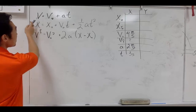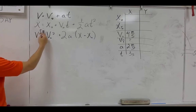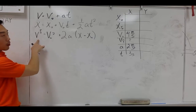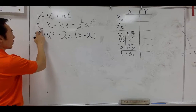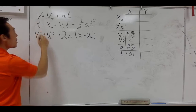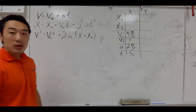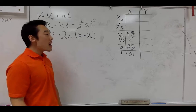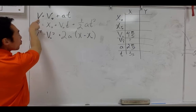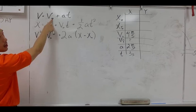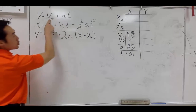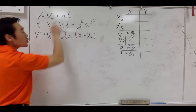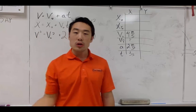The first equation has our missing variable. The second equation does not have our missing variable, so we're not going to use that one. The third one has our missing variable, so we can use that one too. We are looking for v_f. We have v_initial of four meters per second, we have acceleration, and we have time — which means we can use the first equation to solve this problem.